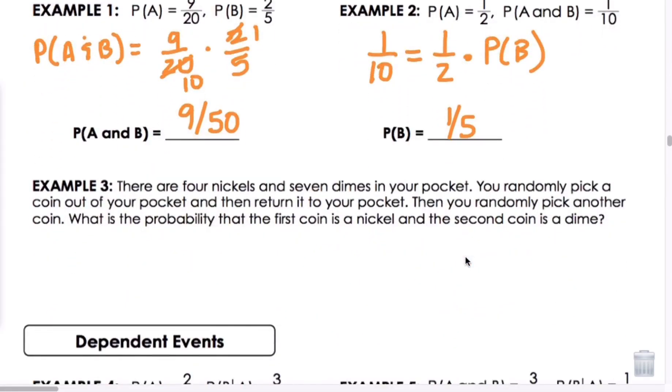Let's look at an actual example. There are 4 nickels and 7 dimes in your pocket. You randomly pick a coin out of your pocket and then return it to your pocket. Then you randomly pick another coin. What is the probability that the first coin is a nickel and the second coin is a dime? So the probability of A and B. We said the first coin is a nickel. So we said there were 4 nickels, 4 nickels out of 11 coins in your pocket, times the probability of B, 7 dimes, and remember we replaced the nickel that we chose first, and out of 11 coins again. So we would end up getting 28 divided by 121, which is approximately 23.1% chance.